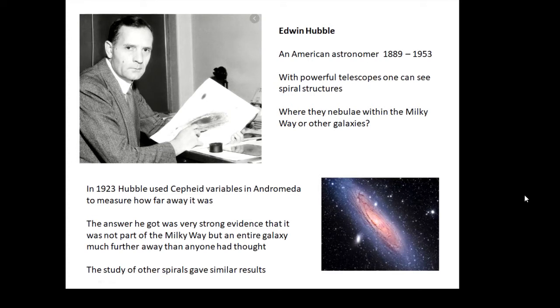With powerful telescopes we can see spiral structures in the sky, and there was a big debate: are they nebulae, spirally clouds of gas in the Milky Way, or are they other galaxies? In 1923, Edwin Hubble used Cepheid variables in Andromeda to measure how far away Andromeda was. What he found out is that Andromeda is very far away, much further than people thought, and he realized that it wasn't in the Milky Way—it was another galaxy completely. He got similar results with other galaxies as well.